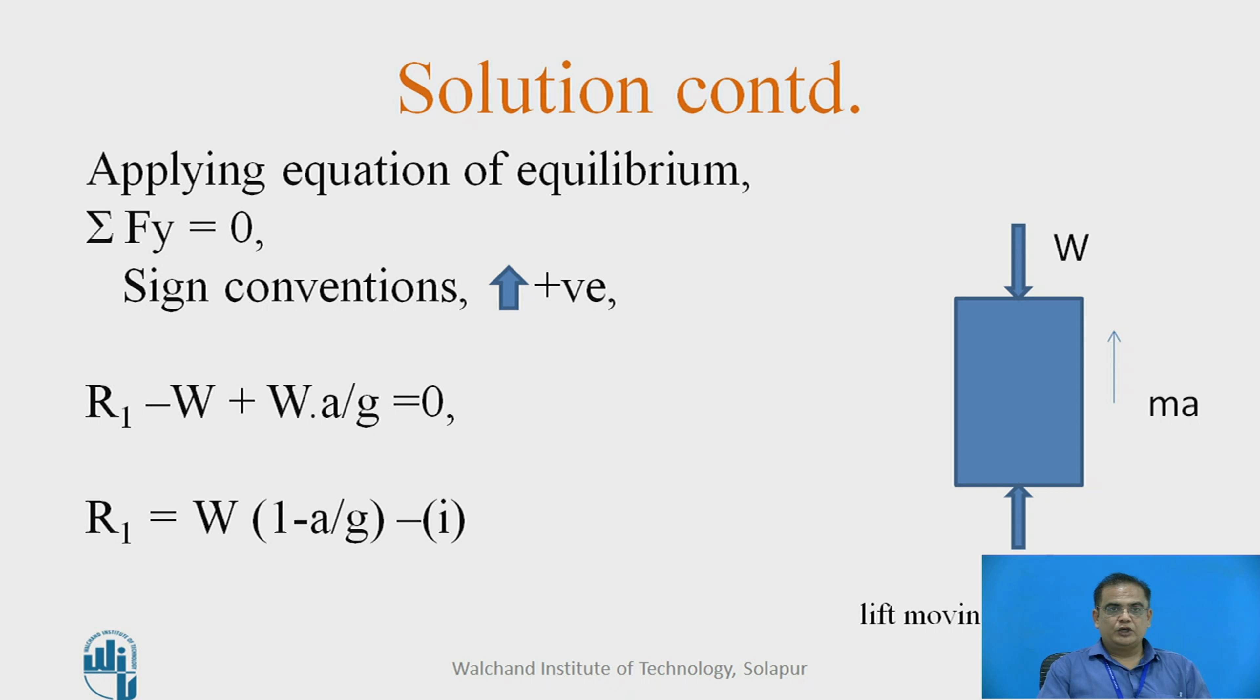Now, we can apply here equations of equilibrium. Sigma Fy equal to 0. Sign conventions upward positive. Now, this will be the equation. Upward force R1 minus W plus Ma, Ma means Wa upon g is equal to 0. So, R1 is equal to W into bracket 1 minus a upon g. This is equation number 1.